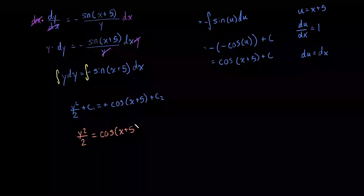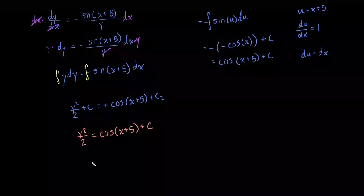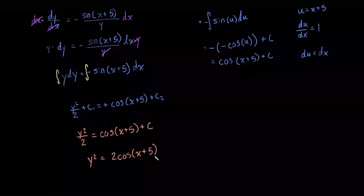Combining our constants, we get y squared divided by 2 is equal to cosine of x plus 5 plus c. Multiplying both sides by 2, we get y squared is equal to 2 cosine of x plus 5 plus c, since 2 times any constant is just another constant.